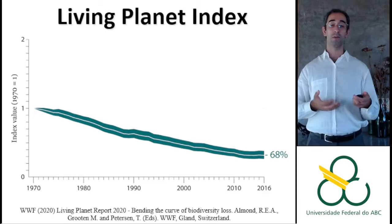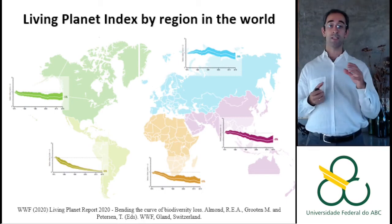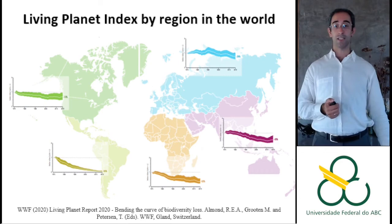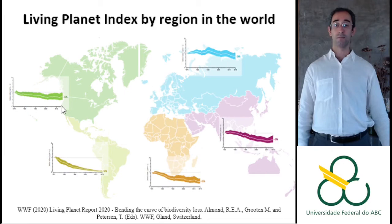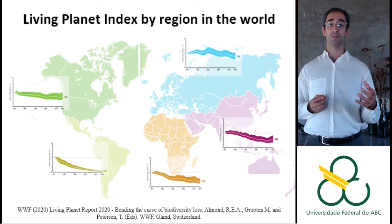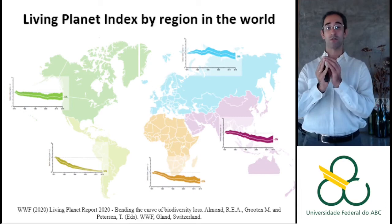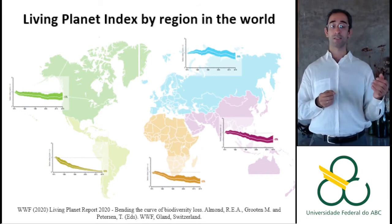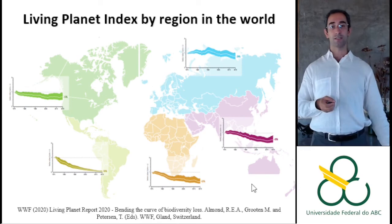By region, Latin America shows the worst declining trend — things are getting worse most sharply there. North America and North Asia show less decline, as temperate areas have fewer species, less endemism, and thus less extinction risk per unit of deforestation. But it is still declining in every region of the world — Africa, Asia, Oceania are also decreasing, though not as sharply as in Latin America.